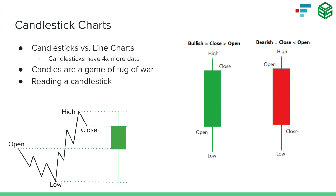You can also see the wicks of the candle — those lines coming off the top and bottom of the body — which show us the high and low prices of the day. Price reached those points at one part of the day but wasn't necessarily opening or closing there. On the left-hand side, there's a diagram showing a squiggly intraday line representing price action over the course of one day, and you can see how that data is condensed down into one candlestick.